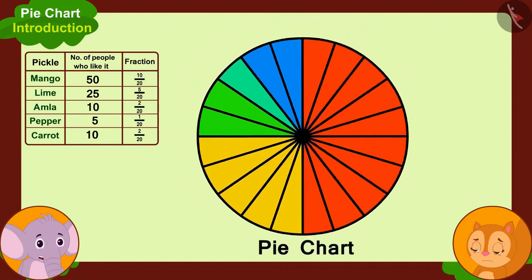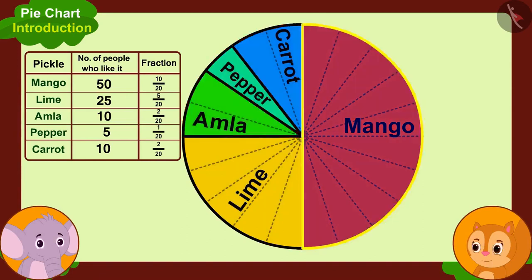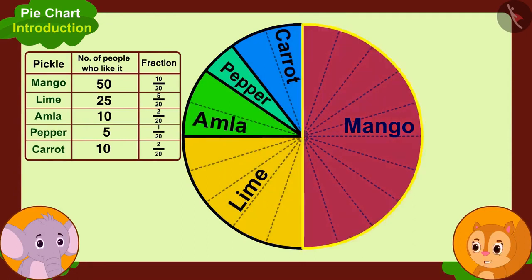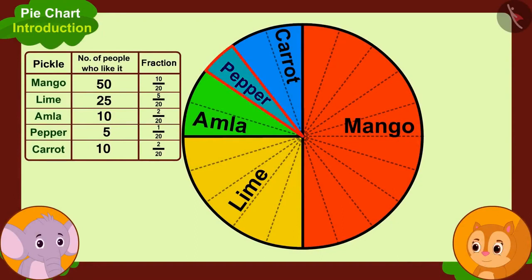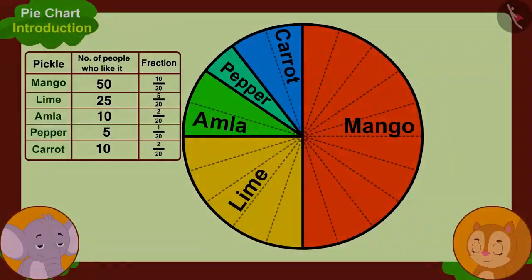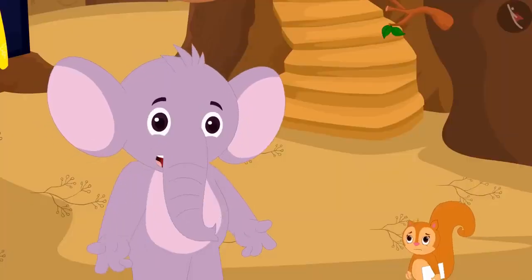Our pie chart is ready. Wow, Appu! Now we can easily find out that people like mango pickle the most, because the largest part of the pie chart shows the number of people who like mango. And this smallest part shows the people who like pepper pickle — so people who like pepper pickle are the least. Appu, similar numbers of people like amla and carrot pickle — they are the same in number. We have to start selling mango pickle first.